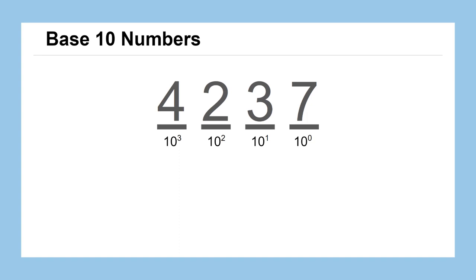So the total value of this number could be computed by doing 4 times 10 to the third, plus 2 times 10 squared, plus 3 times 10 to the 1, plus 7 times 10 to the zero.